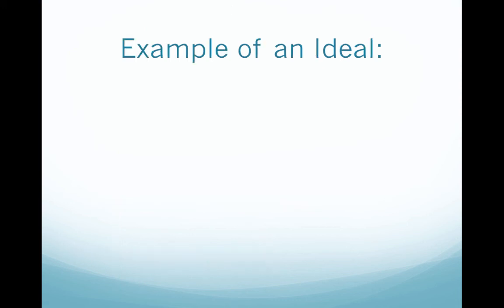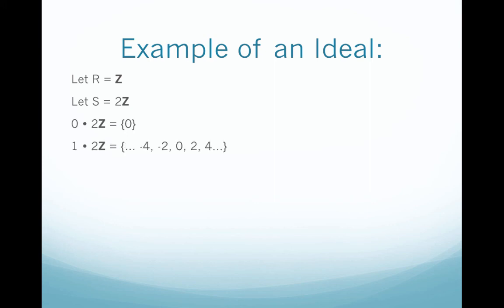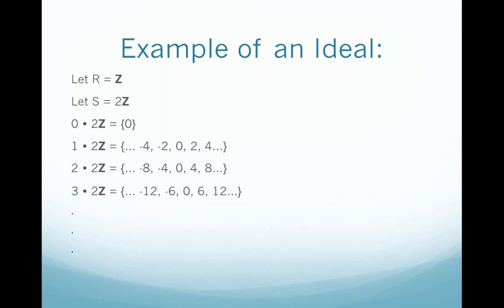Now let's look at an example of a subring that is an ideal. We'll let our ring be the set of integers Z, and we'll let our subring be the set of even integers, or 2Z. If we take any element in Z and multiply it by 2Z, we're going to get something in 2Z. So we could take 0 times 2Z and just get 0. We could take 1 times 2Z and get the set {..., -4, -2, 0, 2, 4, ...}. Hopefully you see that we always get a subset of the even integers. So when we form our quotient ring, it'll be well defined over multiplication because S is an ideal.